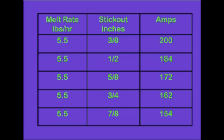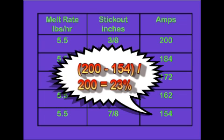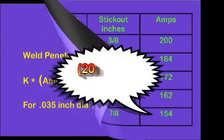This is easiest to do by trial and error. Therefore, put in current values and calculate the deposition rate until you get it close to the 5.5 value. Notice the significant reduction in current that occurs as the stick out increases.